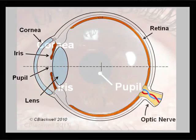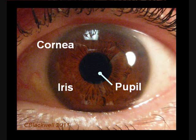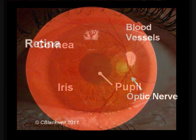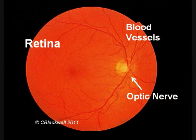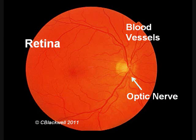In the first video, we explored the focusing parts of the eye: the cornea, iris, and lens. In this part, we will cover the parts that record the image — the retina, optic nerve, and brain. Remember, this is for your information, and if you have eye problems, it does not replace consultation with your ophthalmologist.